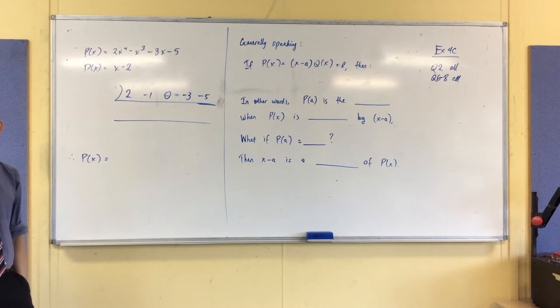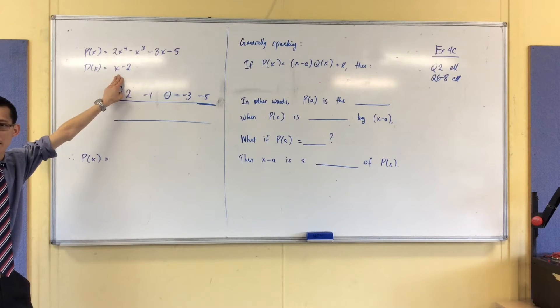And then I want the 0 of the divisor, the 0 of this guy, which is 2.